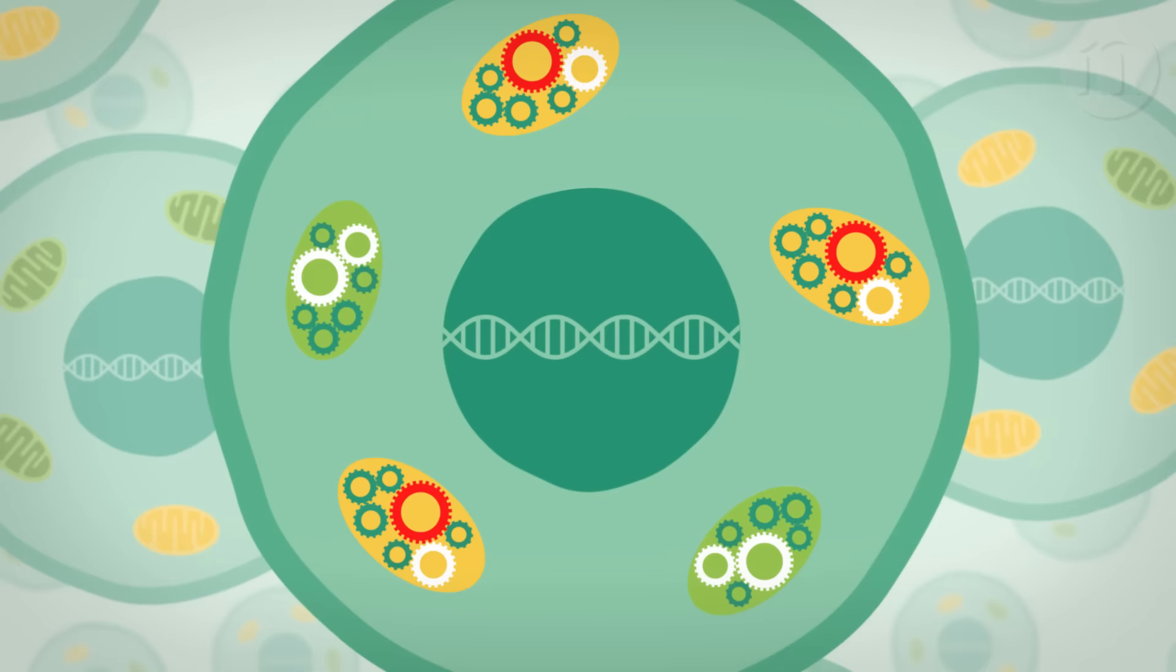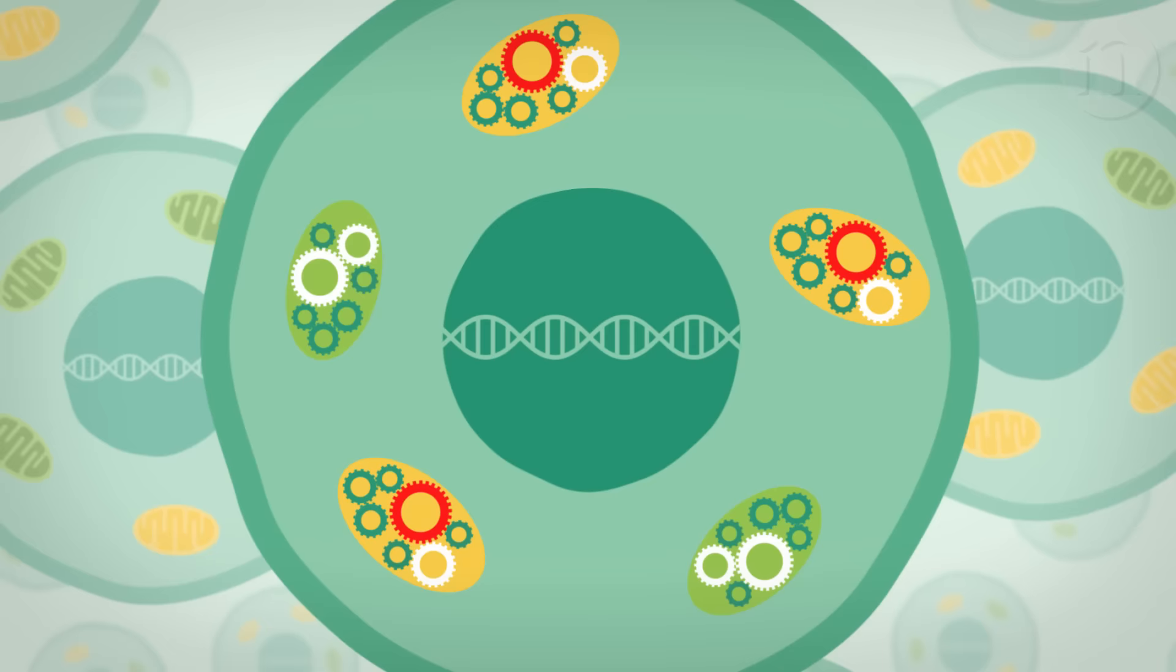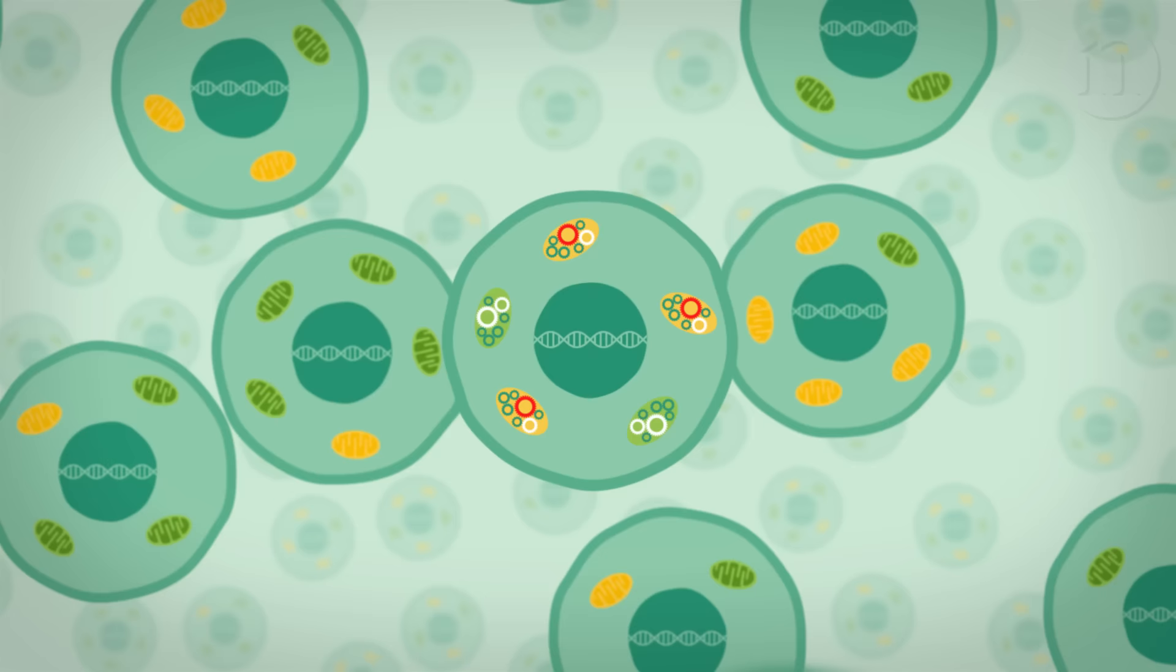If a mutation affects mitochondrial DNA, some might be healthy, others defective. And different cells can have different numbers of defective mitochondria inside them. That means that some cells may be less affected than others.